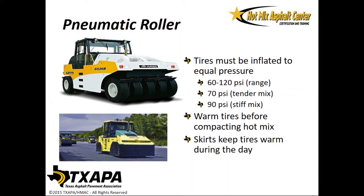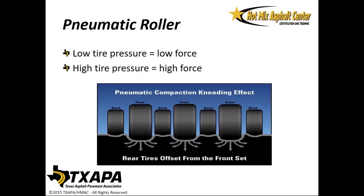Pneumatic rollers vary in weight from 10 to 35 tons. They may have three or four rubber tires on the front axle and four or five on the back axle. Wheels move up and down independently; weight per wheel varies from 3,000 to 3,500 pounds. Tires must be inflated to equal pressure — check the sidewall rating and keep them all at the same PSI. They're usually between 60 and 120 PSI. Best practice is 70 PSI for a tender mix and 90 PSI for a stiff mix. Be sure to warm the tires before compacting the hot mix mat so that asphalt won't stick to the tires.